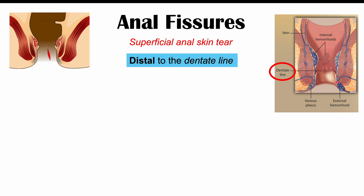The dentate line is shown in this image. Distal means something that is farther away from the core of the body. In this case, it's going to be below the dentate line — farther away from the internal organs — closer to the anal outlet.